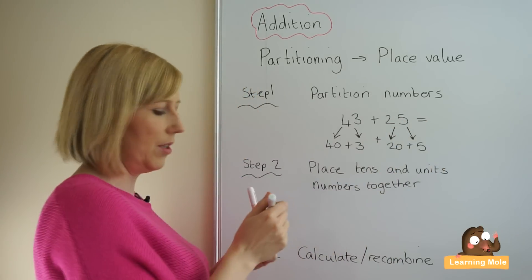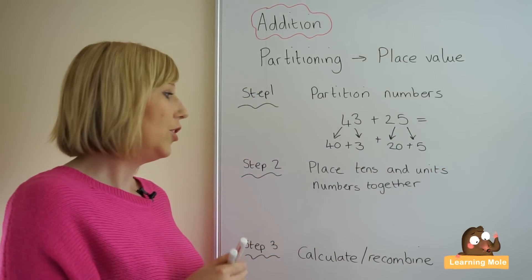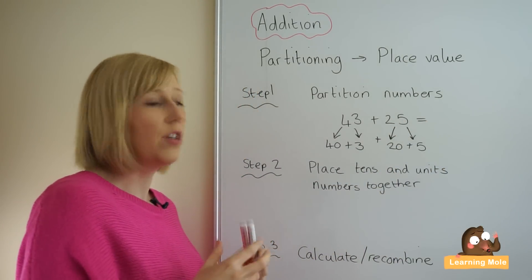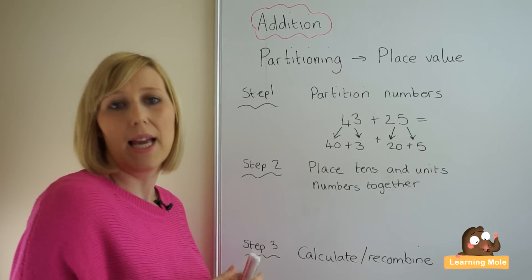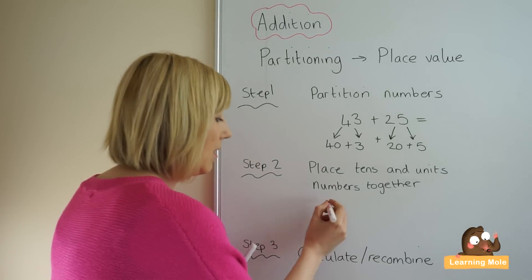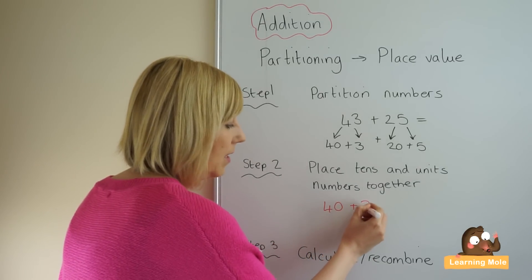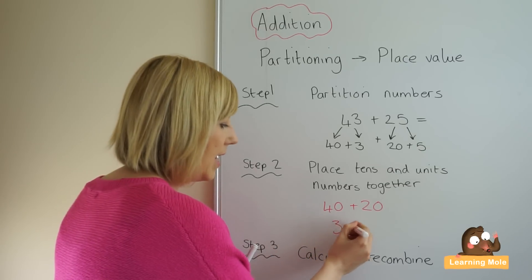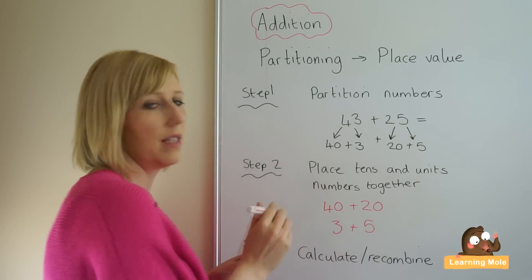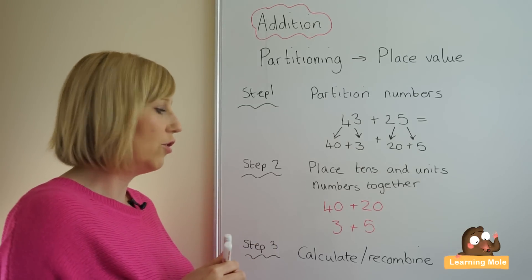Step 2: placing the tens and units numbers together, matching like for like. So knowing that 40 plus 20 go together and 3 and 5. You've got your two tens numbers together, you've got your two units numbers together.